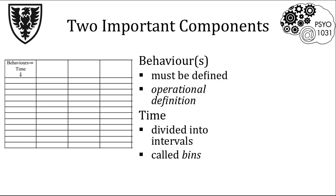There are two important components of an ethogram: the behavior itself and the time period. A behavior has to be defined using an operational definition. An operational definition allows behavior to be coded in a way that makes it easy for others to understand what is being measured.